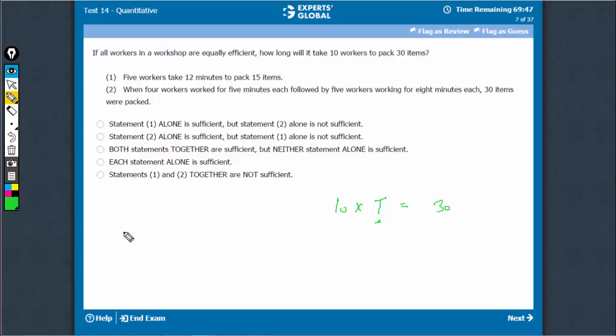Statement 1 says that 5 workers take 12 minutes. 5 into 12, that is 60 man minutes. 60 man minutes is equal to 15 units of work. So 4 man minutes is equal to 1 unit of work.